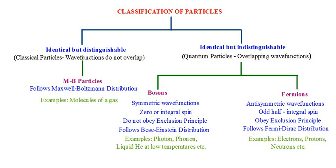Let's look at the broad outline. All particles known to us can be classified broadly into two categories: one category is known as classical particles and the other is known as quantum particles. These are the two broad categories of known particles in the physical world.